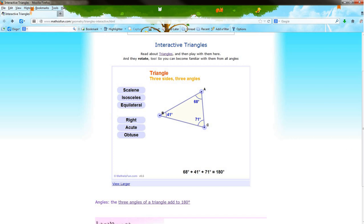When we classify triangles, there are two main ways that we classify triangles. The first way is to classify them by the sides.